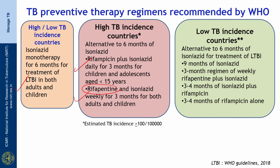In low TB incidence countries — where estimated TB incidence is less than 100 per lakh — alternatively to 6 months of isoniazid, WHO recommends 9 months of isoniazid daily, or a 3-month regimen of weekly rifapentine plus isoniazid, or 3 to 4 months of isoniazid plus rifampicin, or 3 to 4 months of rifampicin alone. These are the regimens recommended as alternatives to 6 months of daily isoniazid.